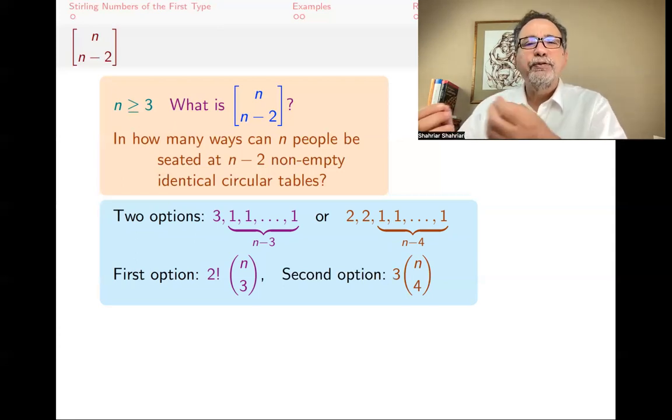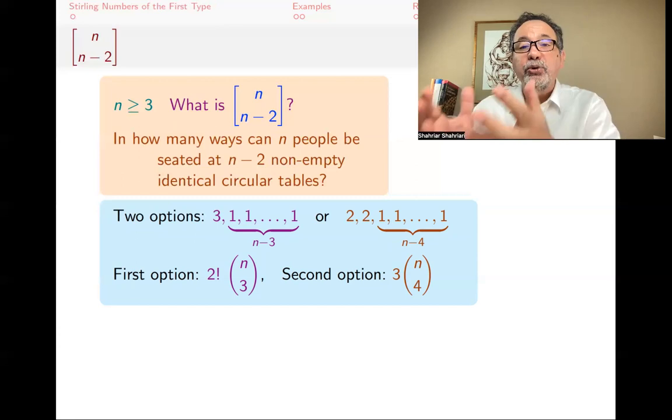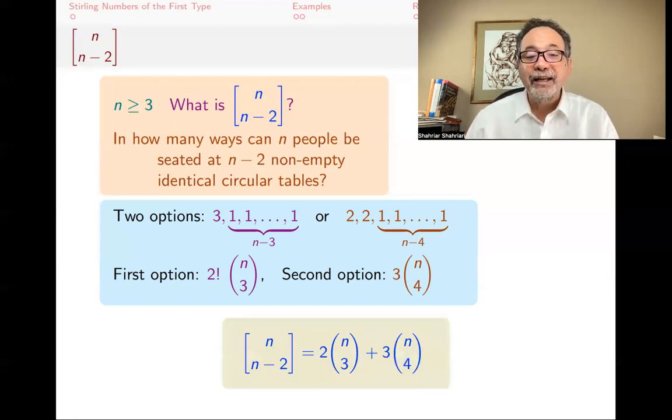And that's 3 times C(n,4). You could also say it's C(4,2), because you pick two out of the four. That's six ways. But that's double counting, because you could pick these two or the complement, the other two, and you would get the same configuration. So you have to take C(4,2) and divide it by two, and you get three. Okay. So this is it. And so [n, n-2] is 2 times C(n,3) plus 3 times C(n,4). And those are the numbers that you get on the second diagonal down.